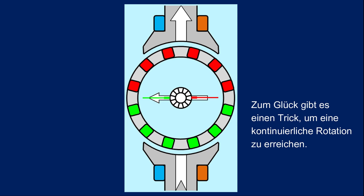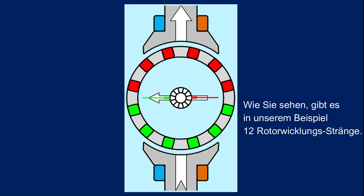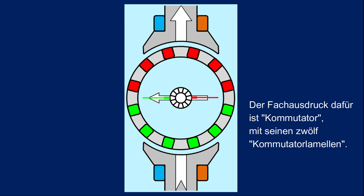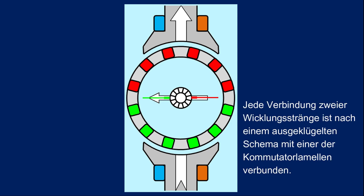Luckily there is a trick how to achieve a continuous rotation. As you see, there are 12 rotor winding strands in our example. Around the hub of the rotor you see a thing consisting of 12 segments. The correct term for this device is the commutator with its 12 commutator bars. Now, each junction between two winding strands is connected to one of the commutator bars according to a sophisticated scheme.